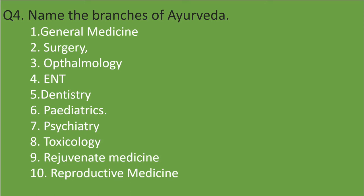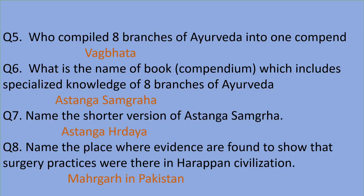So these are all 10 branches of Ayurveda which were practiced in ancient times. Now the next question is: who compiled 8 branches of Ayurveda into one compendium? That is, name the scientist who compiled all 8 branches of Ayurveda into a single book. The answer is Vagbata.